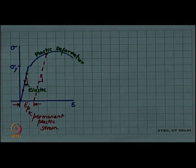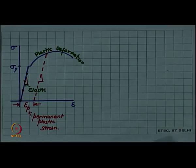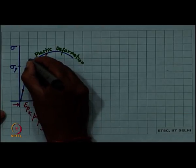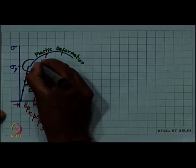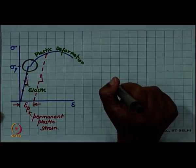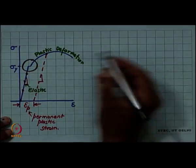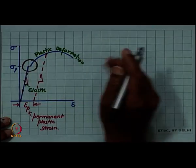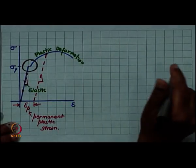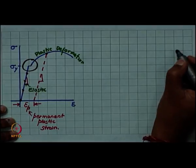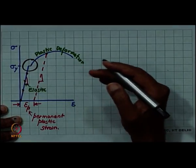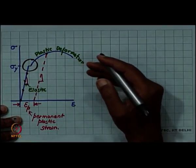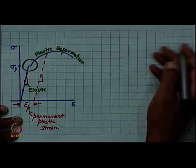Let us focus on this part of the curve, the transition from elastic to plastic. What really happens, in terms of the internal structure of the material, what really happens when it undergoes a transition from elastic to plastic deformation?